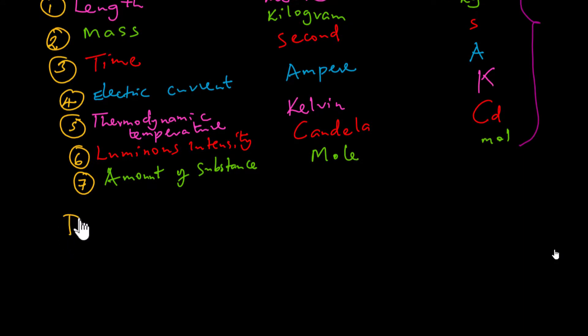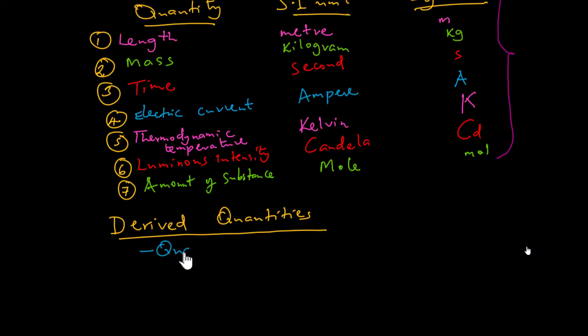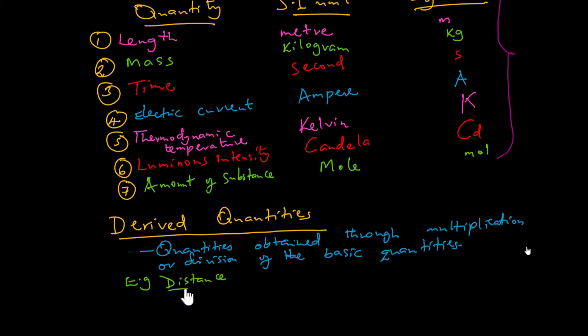Before winding up on the SI units, let us define what derived quantities are. Now, derived quantities refers to those quantities that are obtained through multiplication or division of the basic quantities. An example of a derived quantity is speed. Speed is simply defined as the distance covered over time taken.